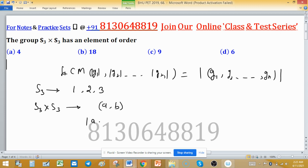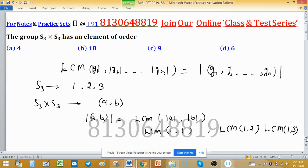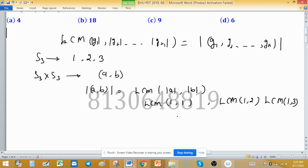Then order of this element AB will be LCM of possible order of A and possible order of B. We know that possible order of A and B are 1, 2 and 3. So we have LCM of 1, 1; LCM of 1, 2; LCM of 1, 3 and other pairs also.